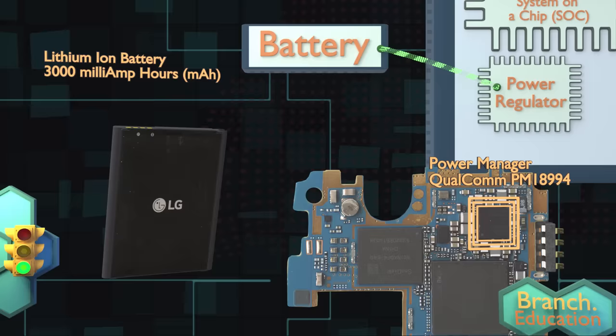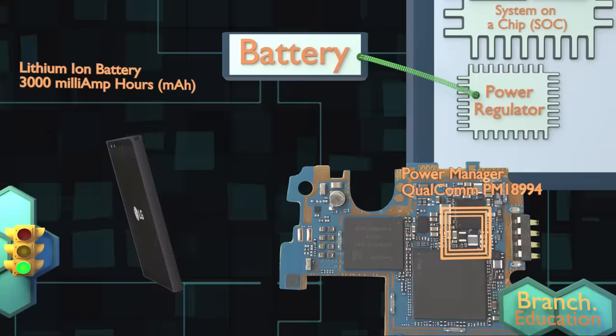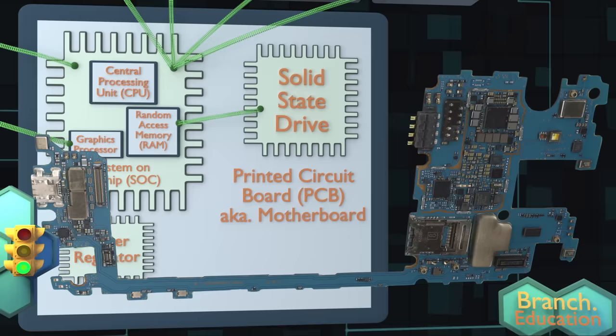All of the components use electricity provided from the battery pack and power regulator. Wires carry this power to each component, while separate wires carry electrical signals to allow the components to communicate and talk between one another. This is a printed circuit board, or PCB, and it is where a lot of components such as the CPU, RAM, and solid state drive are mounted.